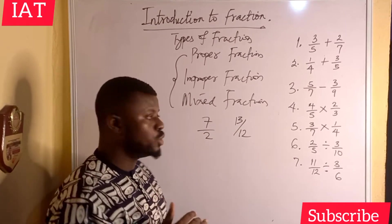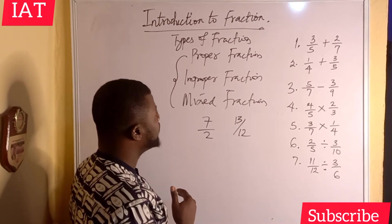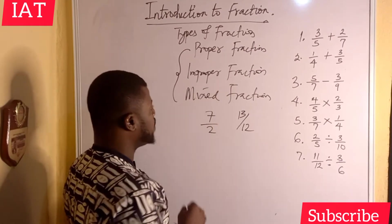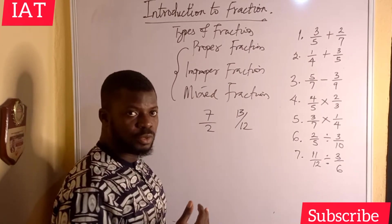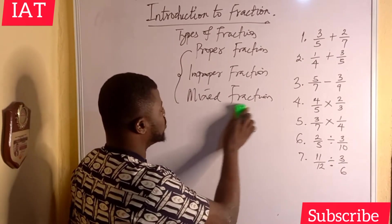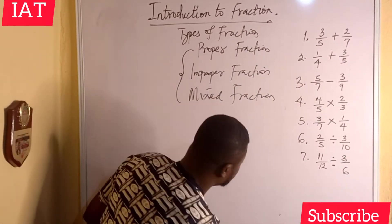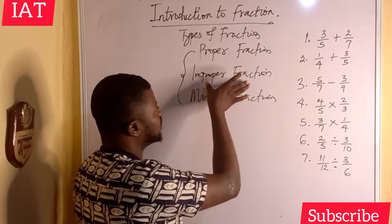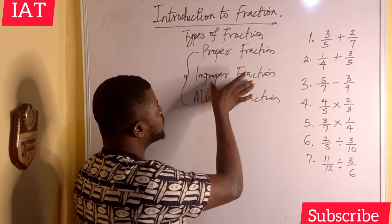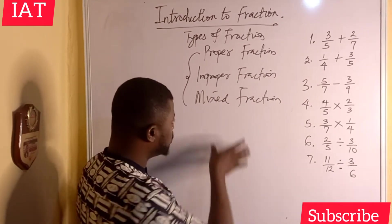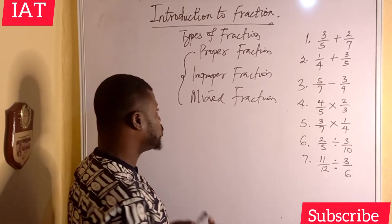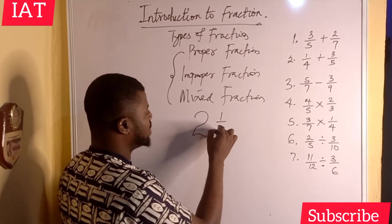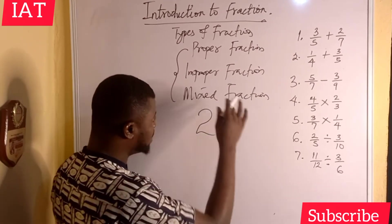In the next video I'm going to teach you how to convert from improper fraction to mixed fraction and from mixed fraction back to improper fraction. The last type I'll discuss here is mixed fraction. Mixed fraction comes as a result of balancing an improper fraction. For example, two and one over three — that is the shape of a mixed fraction.